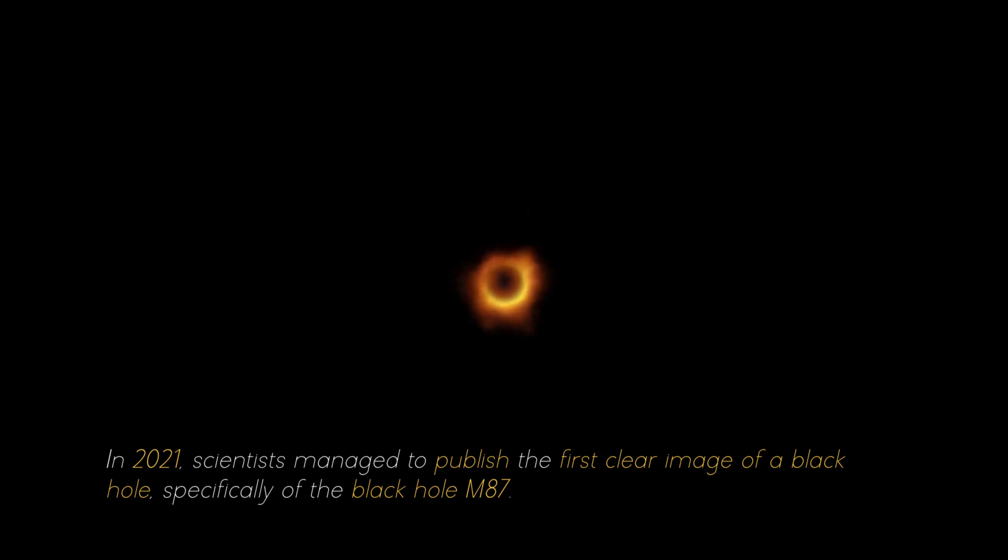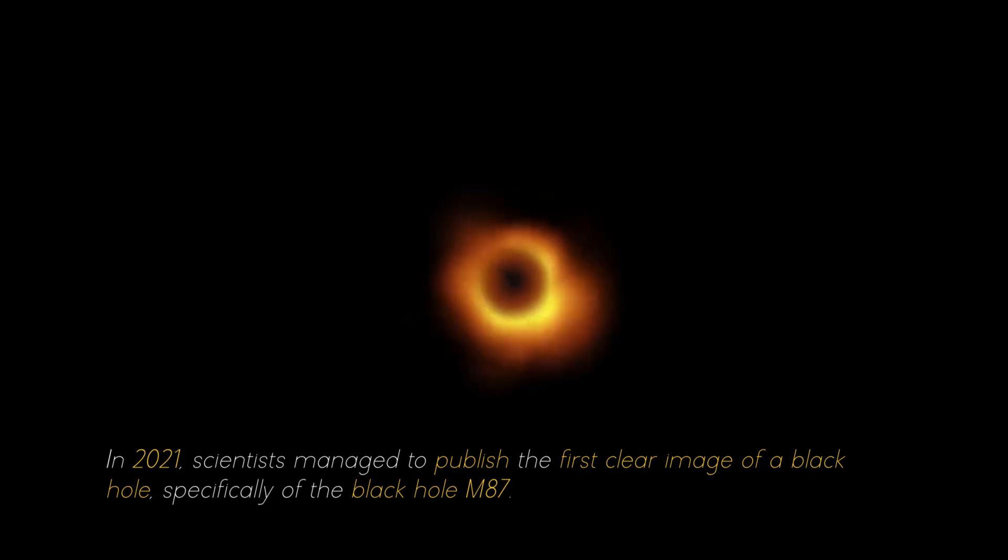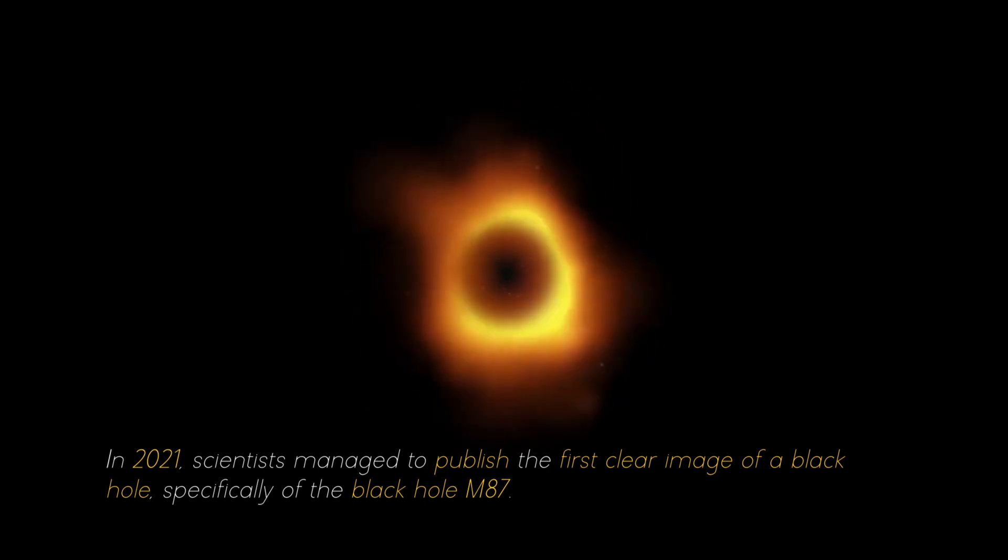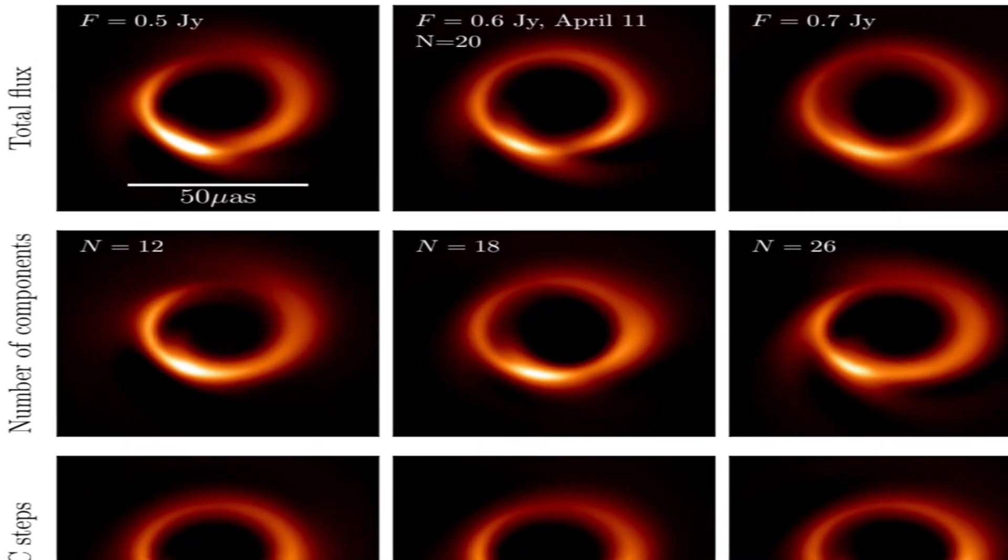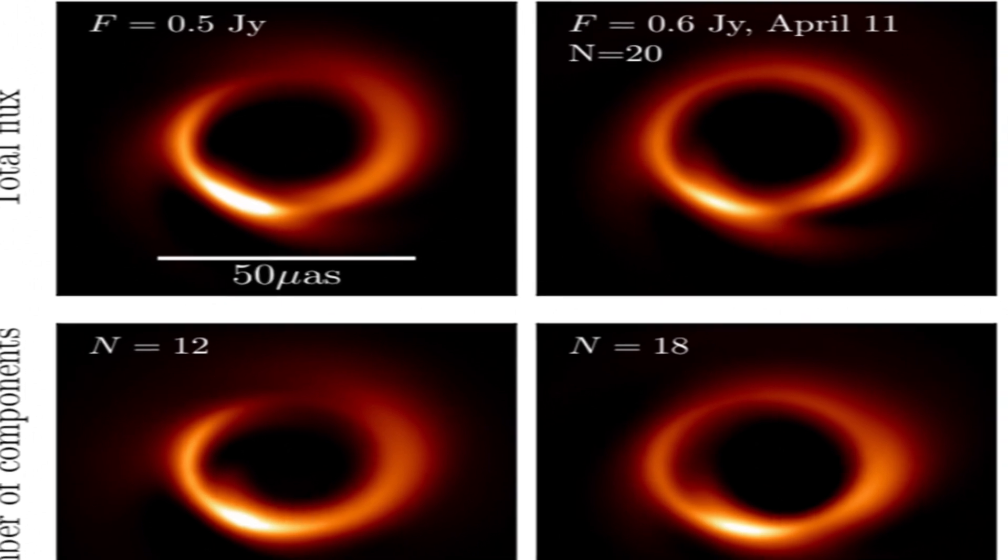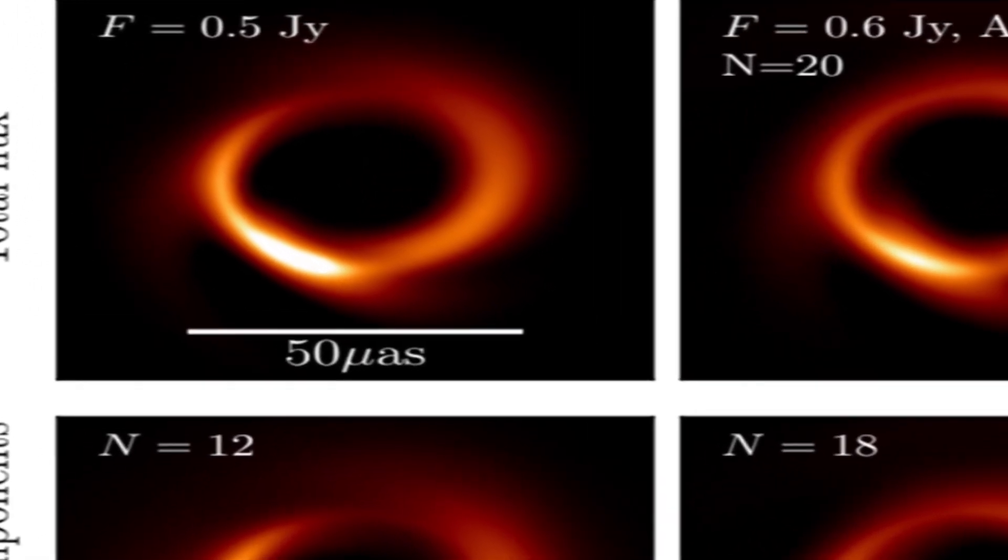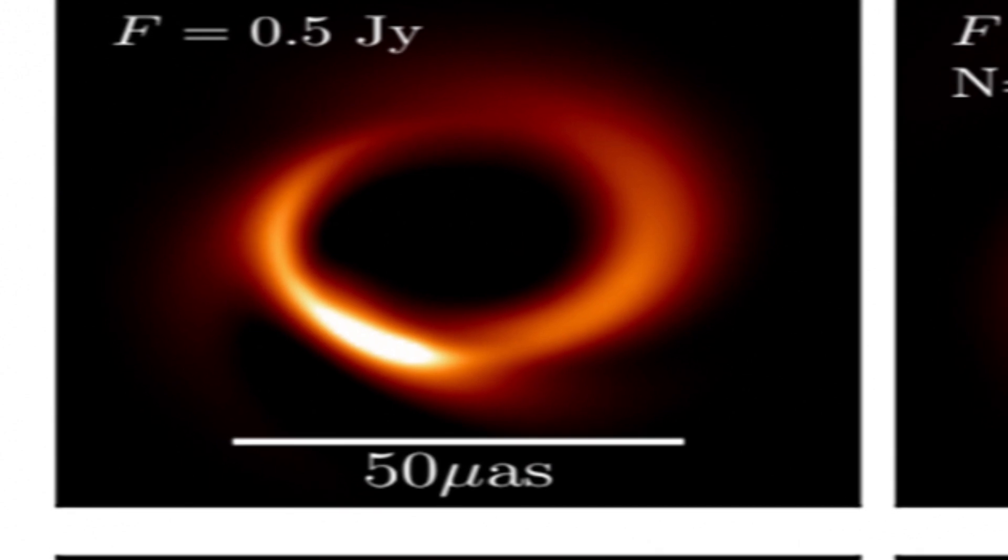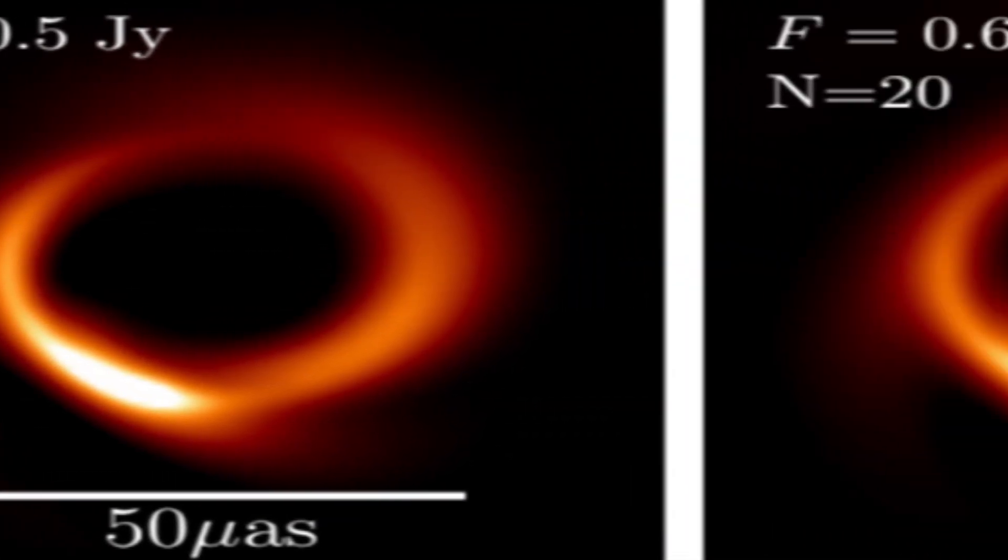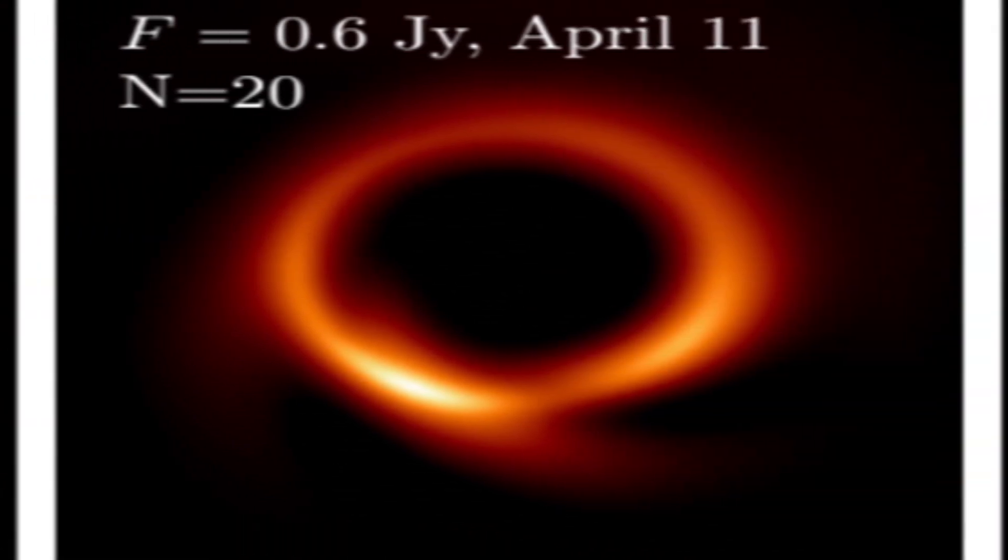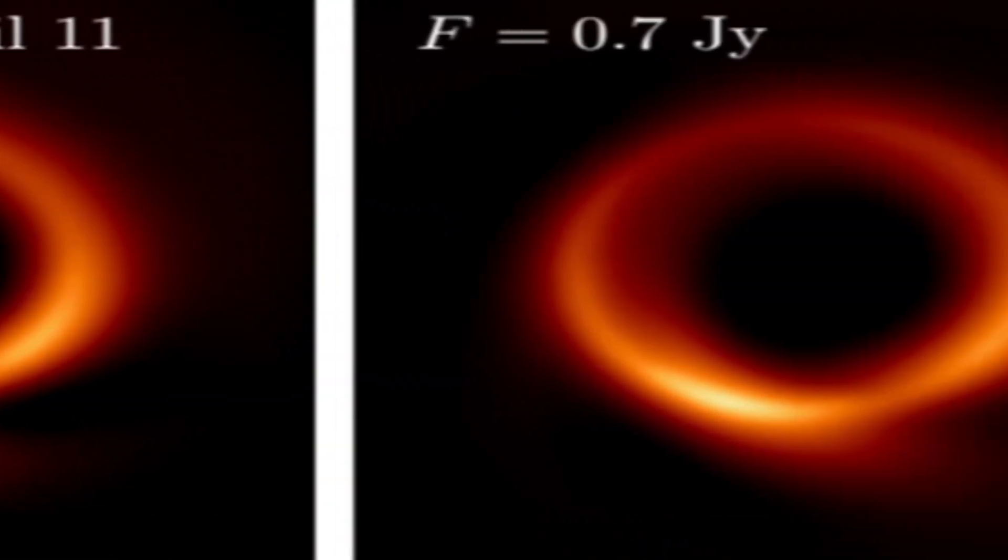In 2021, scientists managed to publish the first clear image of a black hole, specifically of the black hole M87. For several consecutive nights, photographs of the black hole were taken, and with each image researchers collected more evidence about it. It was necessary to combine the individual photographs to obtain a complete image that filled in all the gaps.